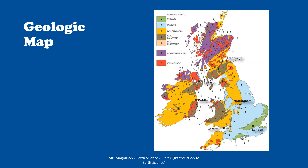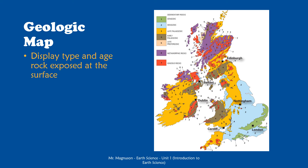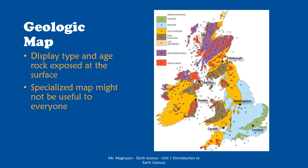Next we're going to look at an even more specialized type of map called a geologic map. These are used to display the type and the age of rock exposed at the surface. Here we have a map of England showing the ages of different rocks present. You can use the color key to determine types of rocks — whether they are sedimentary, metamorphic, or igneous — and for igneous rocks, how old they are. These rock types and geologic periods are things we'll cover later in the year. This is a very information-rich map, but it's specialized — only someone who needs to know what might be under the surface, like for mining or extracting oil, would really need a geologic map.